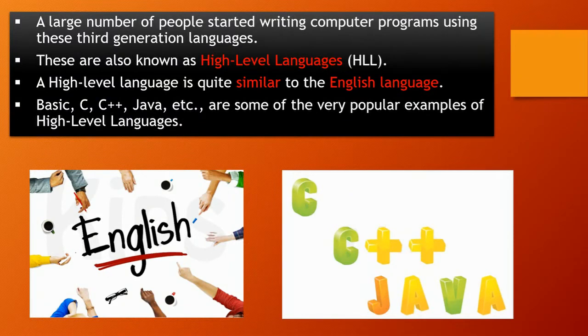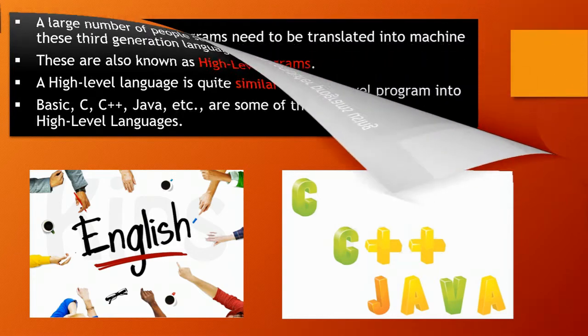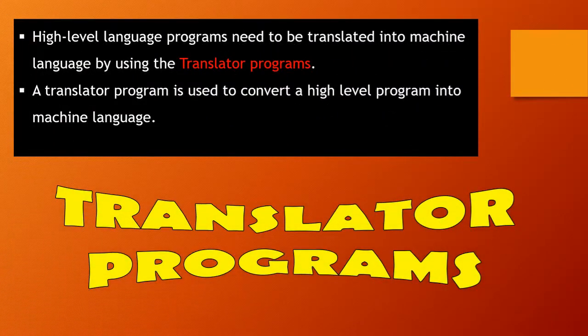This language is quite similar to the English language. Examples of such languages are C, C++, Java, Basic, Python, COBOL, Fortran, etc. High-level language programs need to be translated into machine language by using a translator. The translator is used to convert a high-level program into machine language.